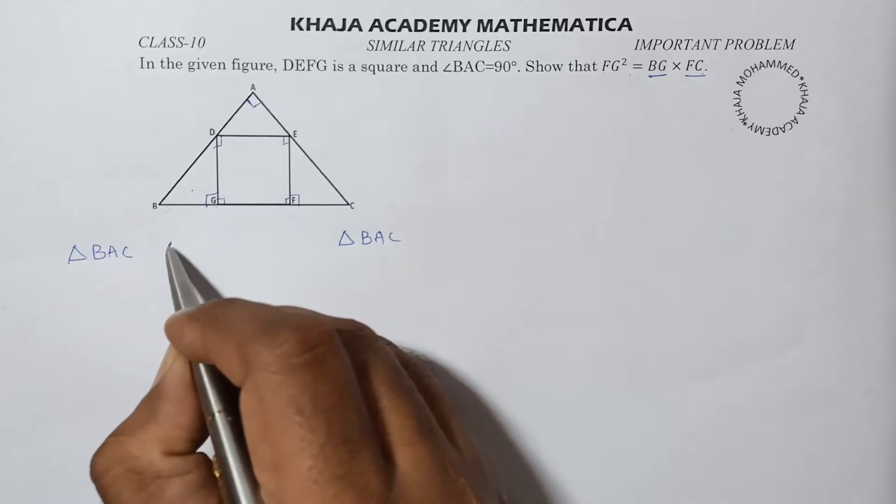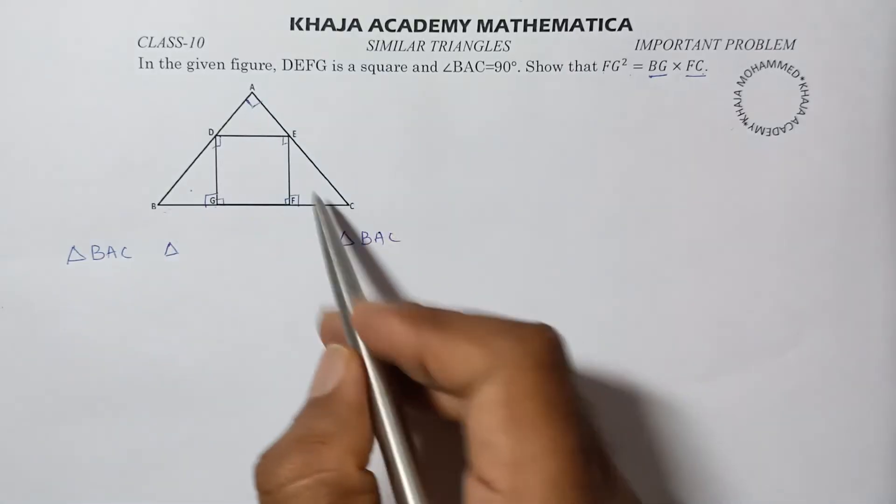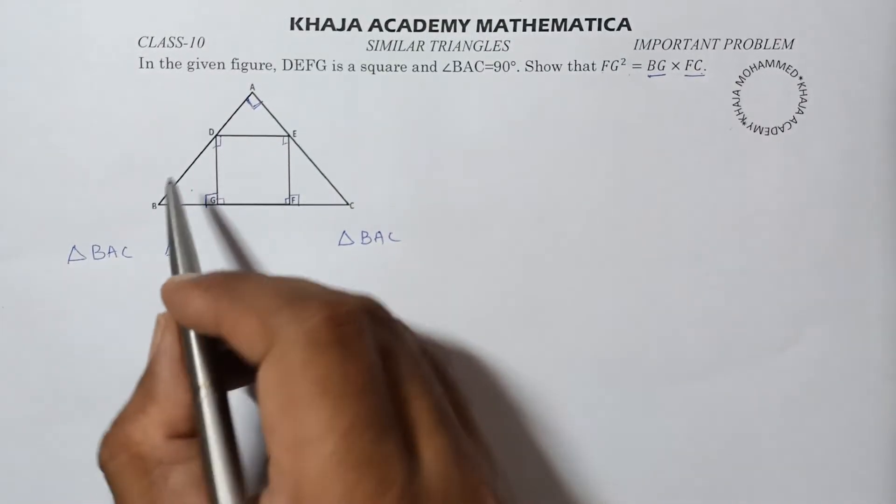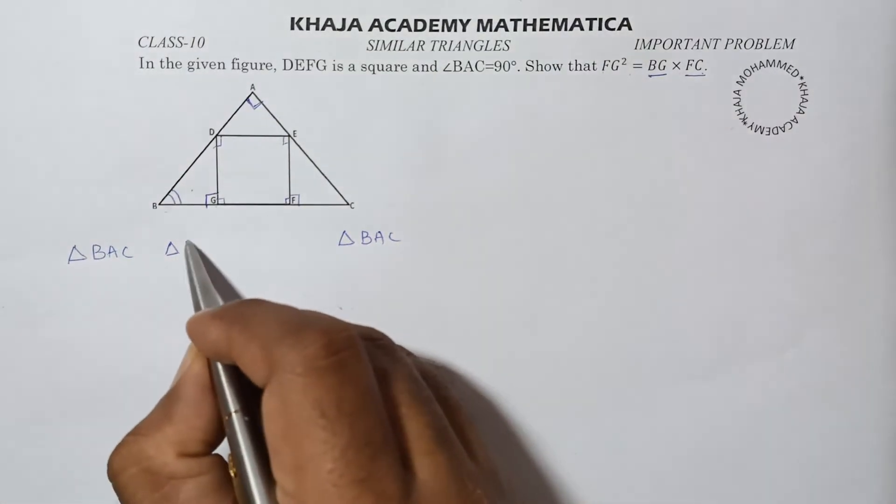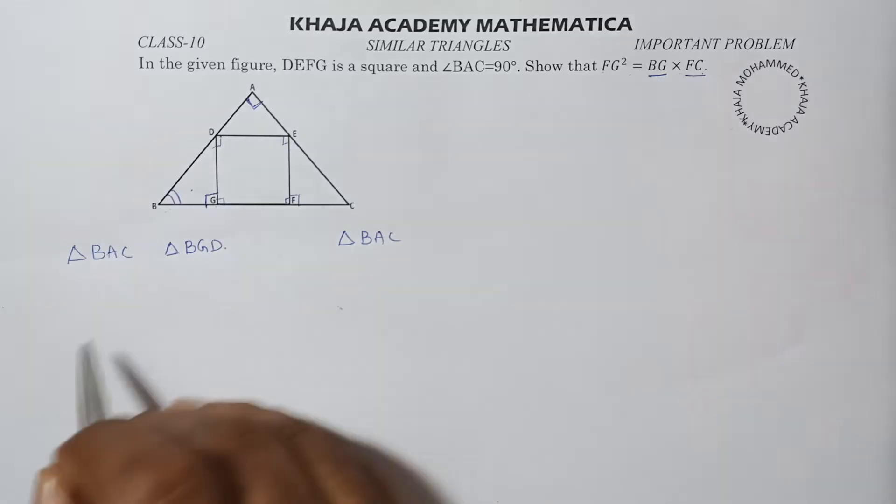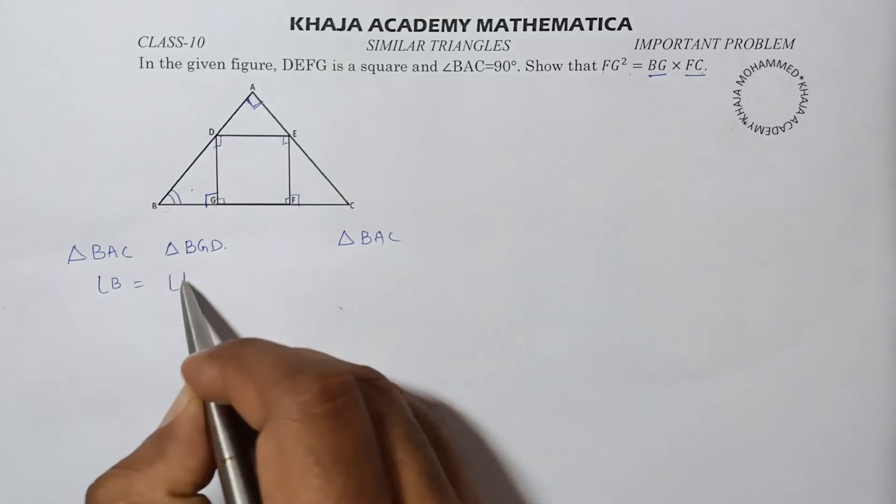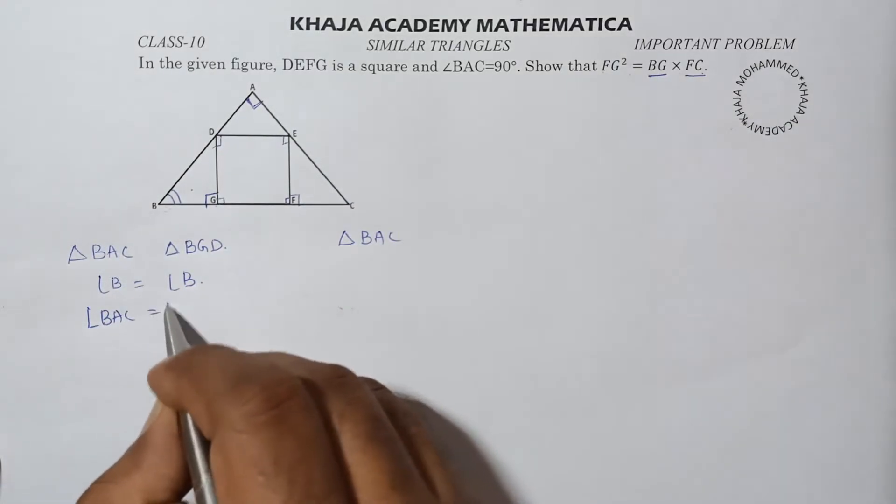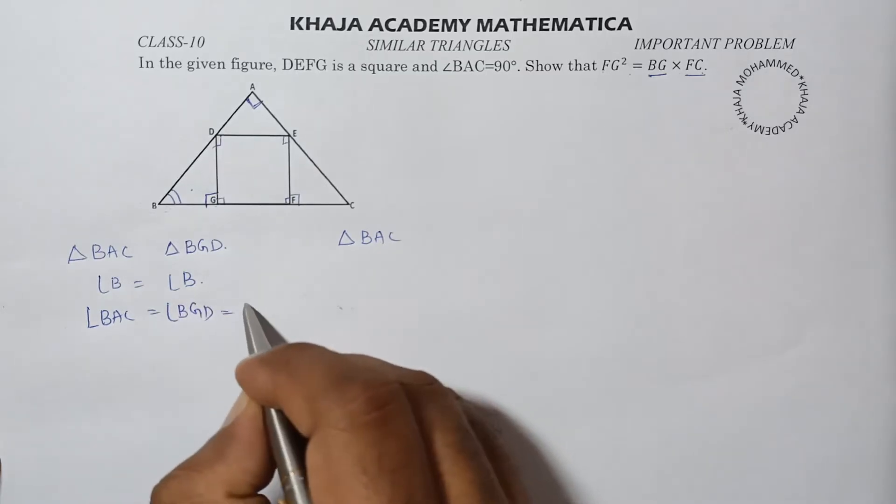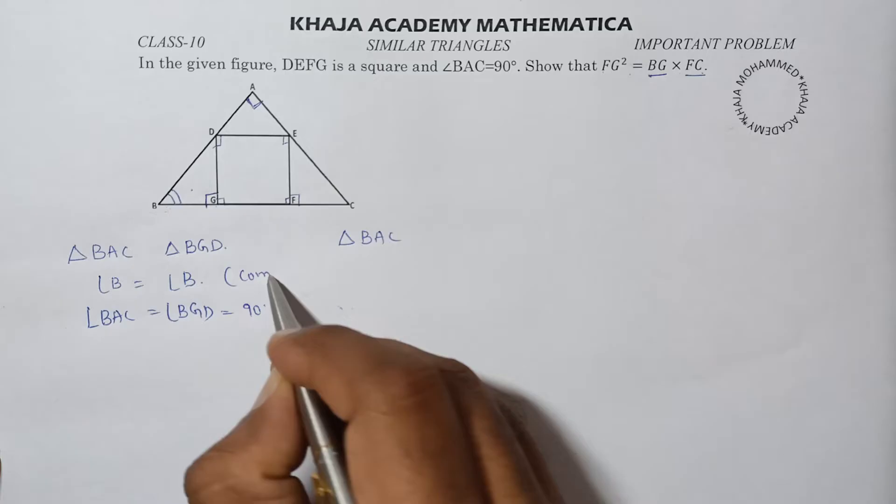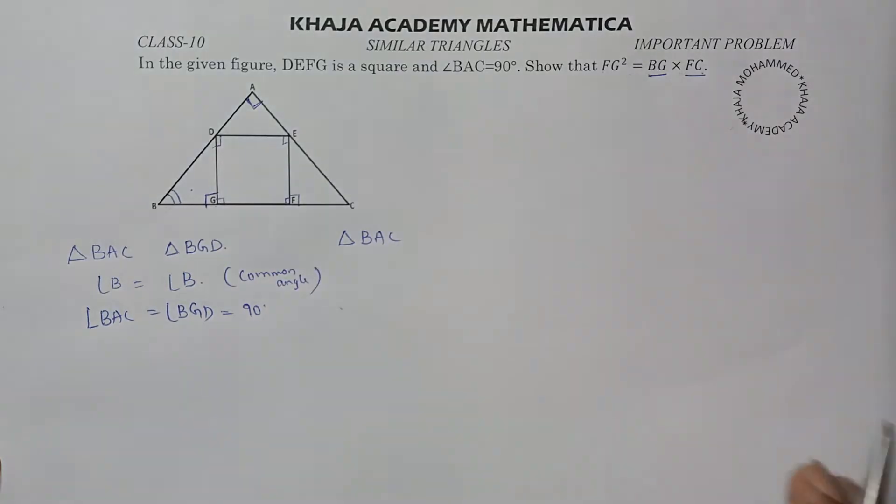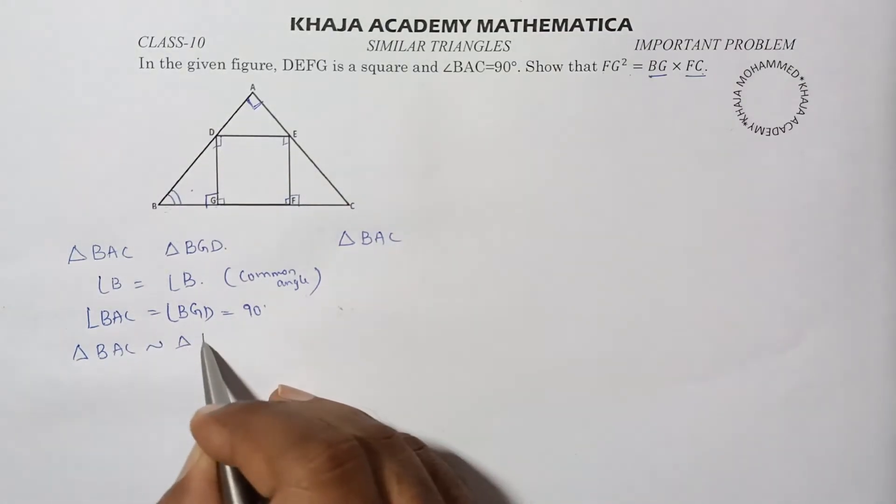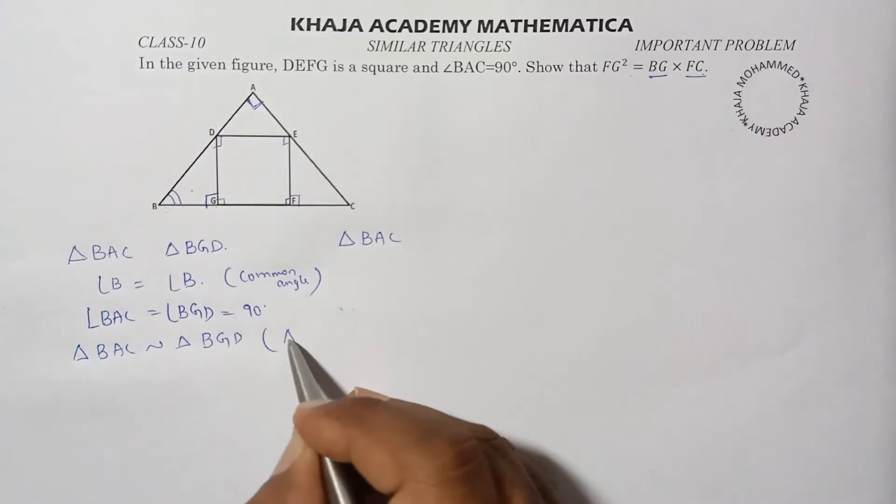In triangle BAC we have 90 degrees, and in this small triangle BGD we also have 90 degrees. In BAC and BGD, angle B is common. So angle B equals angle B, which is common angle, and angle BAC equals angle BGD, which is 90 degrees. These two triangles are similar. Triangle BAC is similar to triangle BGD by angle-angle corollary.